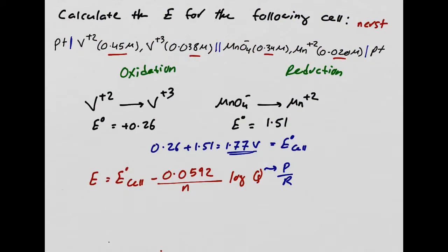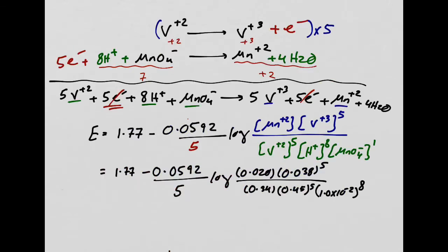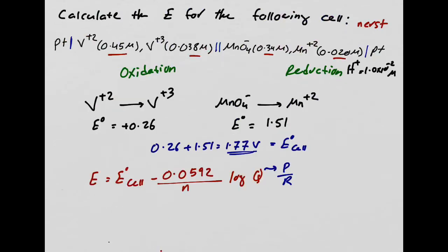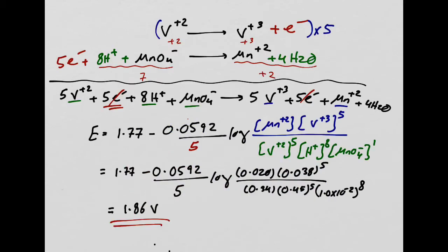The H⁺ concentration is 1.0 × 10⁻² M — sorry for not giving that earlier. With all values plugged in, the final answer is 1.86 volts. We've done a lot of problems like this — hopefully you feel really confident. Nice job, keep doing practice problems, and I'll talk to you next time for the next chapter.